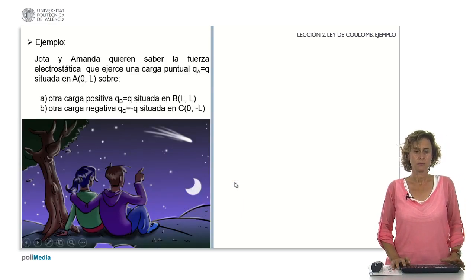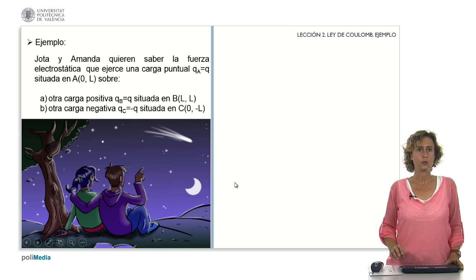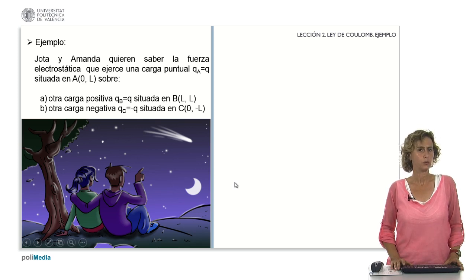Let's see an example where this is made clear. Jota and Amanda want to know the electrostatic force that a charge Q sub A has on a charge Q sub B. It's located at the point A, and we want to see the force on another positive charge Q located at a different point. Then we will see it for a negative charge.